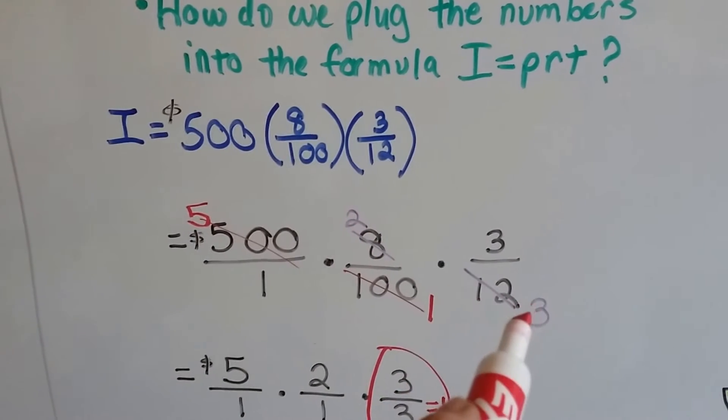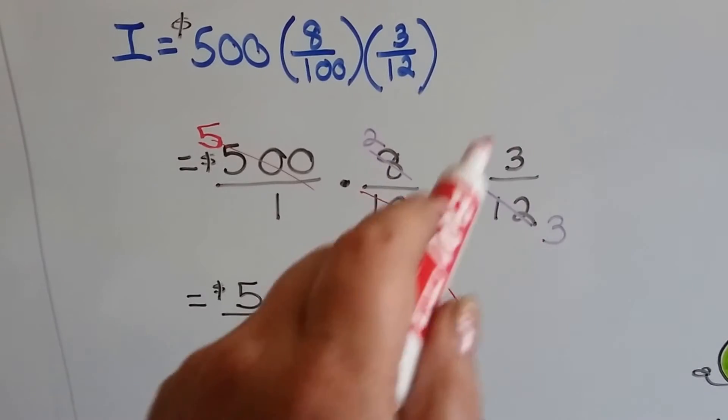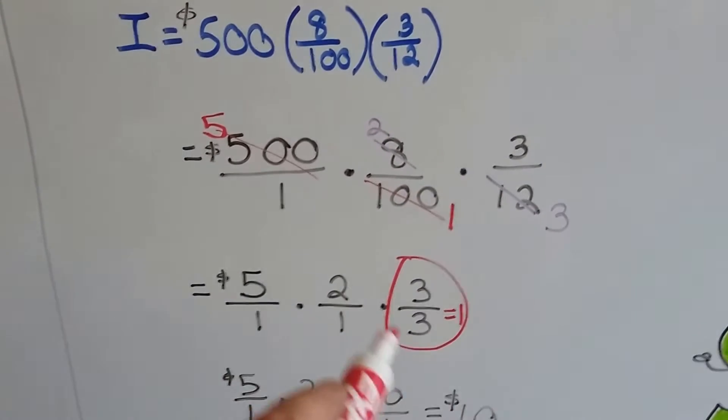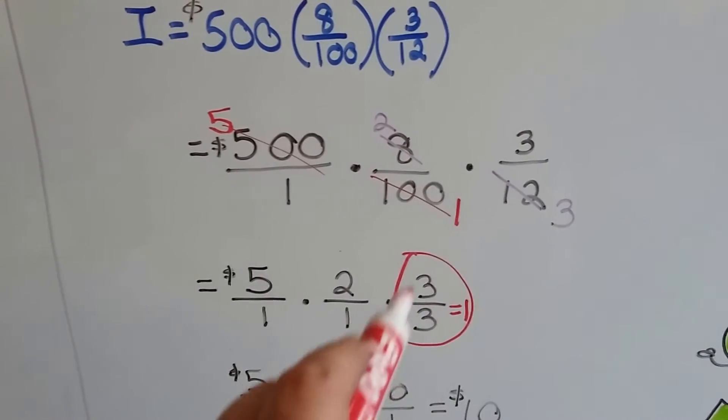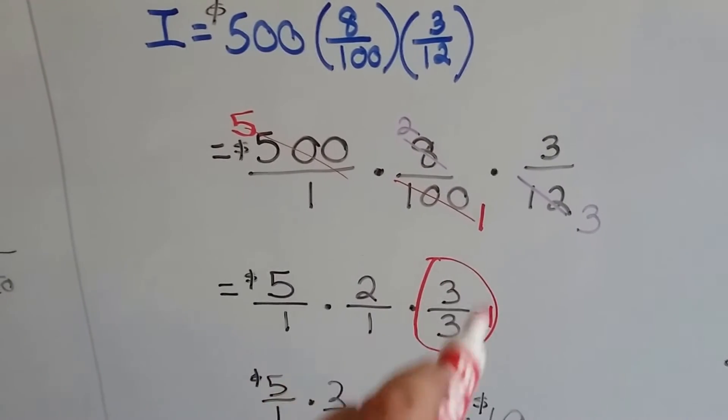You see what happened to this one? It became three-thirds, and when a numerator and denominator are the same it becomes one. So we don't need to multiply this by one, do we?